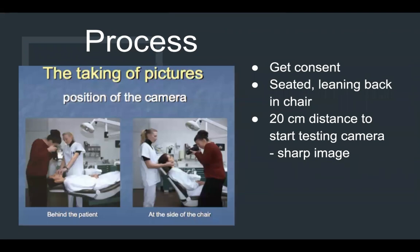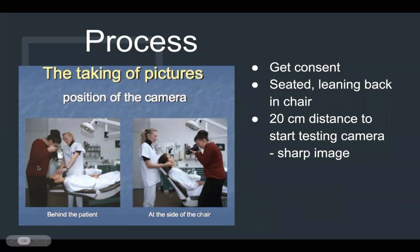For the process: take consent of the patient for any photography. Seat the patient on the dental chair, ask them to lean back, and your camera should be at least 20 centimeters distance. Do a test trial image to see how clear and sharp it is, then do the particular pictures with retractions. You can do the occlusal pictures from the top, then the lateral view, buccal pictures, and frontal pictures. You always need an assistant to retract the cheeks with precision. If you don't have a dental assistant, the patient can sometimes help, but you can train them by showing them in a mirror how you want it stretched.